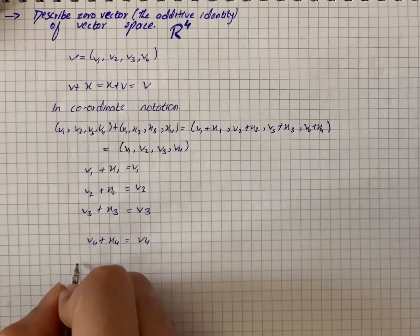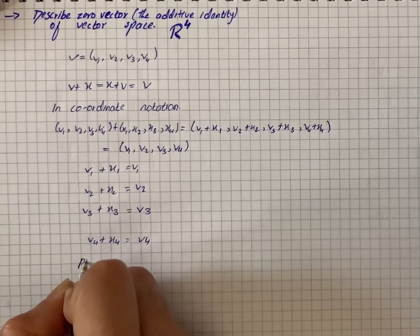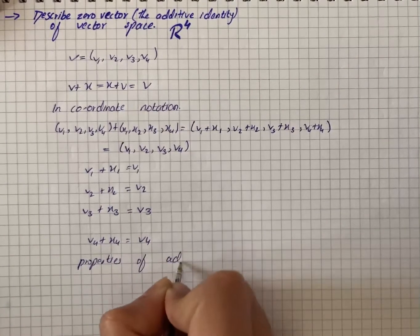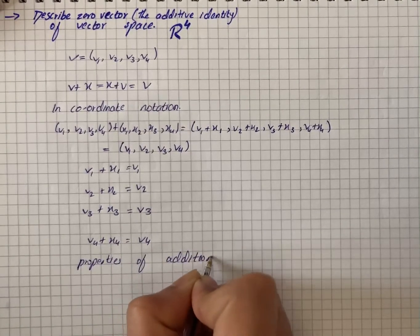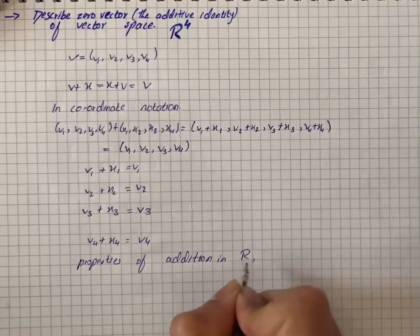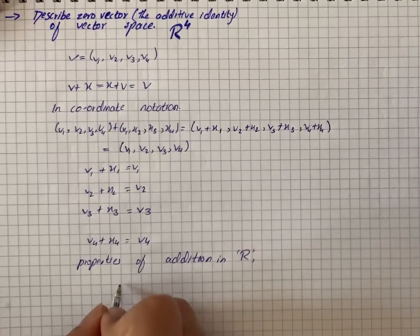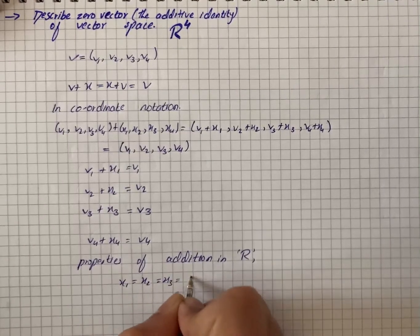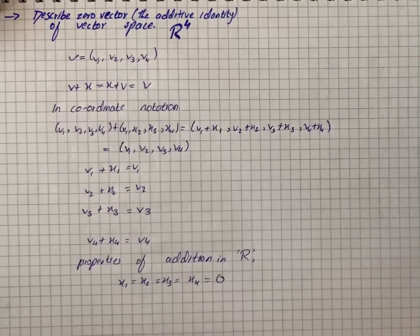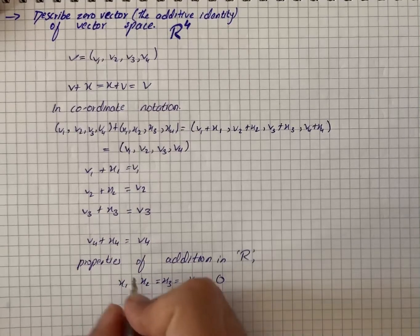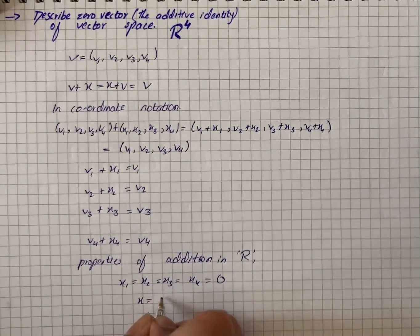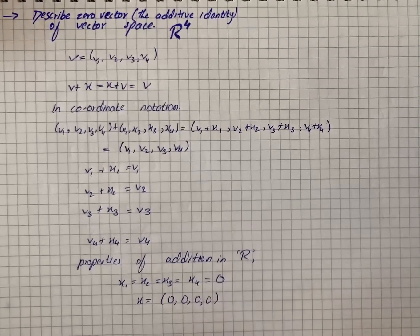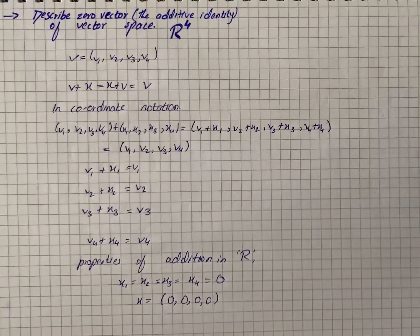Properties of addition in R1 tell us that X1 equals X2 equals X3 equals X4 equals 0. So the additive identity vector is X equals (0, 0, 0, 0). That is the additive identity vector for the given question.